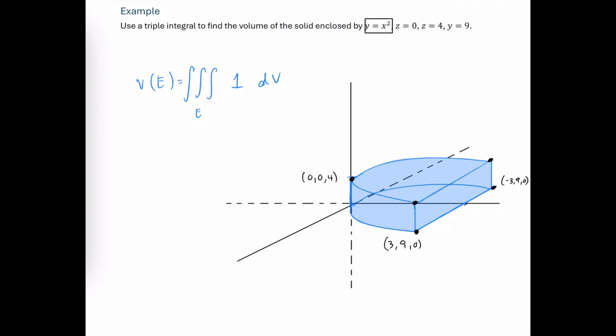And (-3, 9, 0) in the floor. And then the corresponding ordered triples up at the elevation of four.